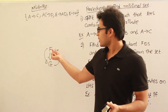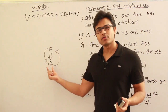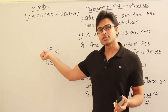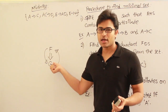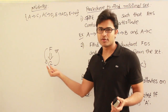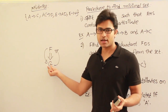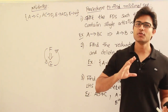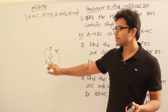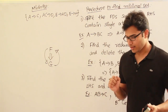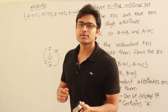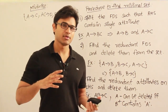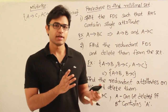Once you get a functional dependency set G such that it is covering F and F is covering G — which means both are equivalent to each other — and moreover G is minimal, which means you will not be able to delete anything from G and still have this property, then we can say that G is the minimal cover of F. The advantage is it contains very fewer productions and fewer attributes on the left hand side.